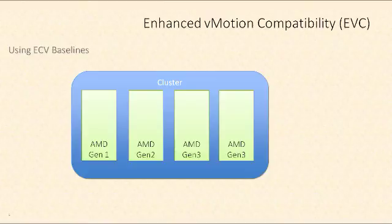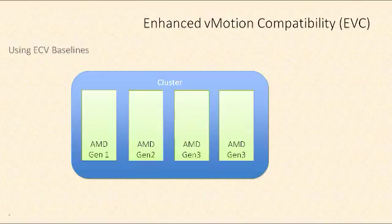EVC uses built-in technology with AMD or Intel processors to create a consistent feature set across ESXi hosts. In order to accomplish this, newer processor features have to be masked so that they can match up with the older CPUs. You'll choose a baseline of an older processor — the baseline you choose must be supported by the host with the smallest feature set in that cluster. This doesn't slow down your CPUs or throttle them back; it masks certain features so that all of the processors feel the same to your VMs.